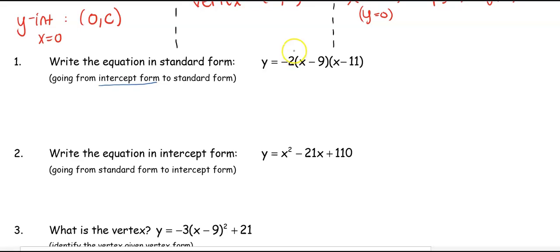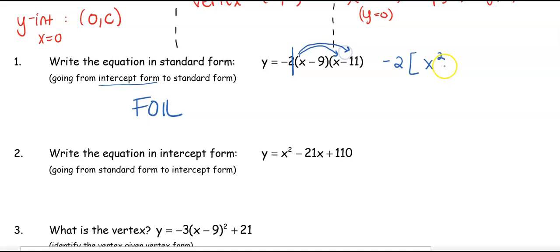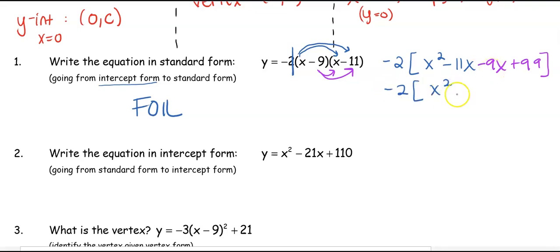I'm going to FOIL or distribute: x times x gives us x squared, then distributing gives us minus 11x. Then distributing the negative 9 to each piece — negative times negative gives us positive 99. Combining like terms on the inside gives us x² minus 20x plus 99.